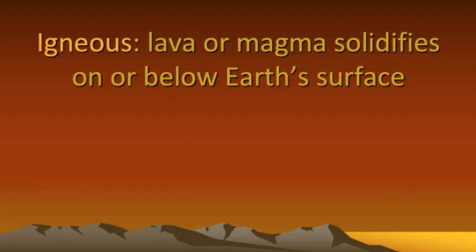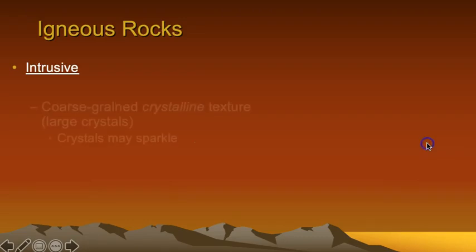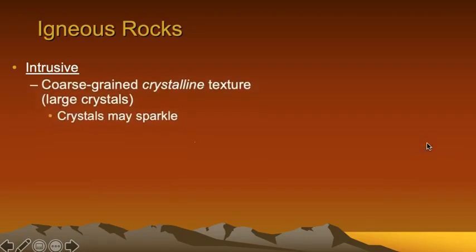Igneous rocks form when lava solidifies on Earth's surface or magma solidifies deep underground. There are two categories of igneous rocks, intrusive and extrusive. Intrusive igneous rocks form inside Earth, deep underground, and are characterized by coarse-grained crystalline textures, where mineral crystals are large enough to be recognized without a microscope. Cleavage surfaces may cause these rocks to sparkle in the light.